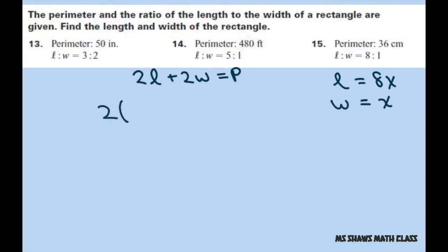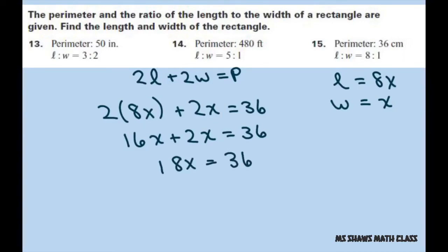2 times 8x plus 2 times x equals 36 centimeters. So 16x plus 2x equals 36. 18x equals 36. Divide both sides by 18, so x is 2.